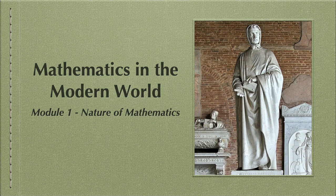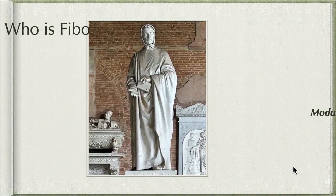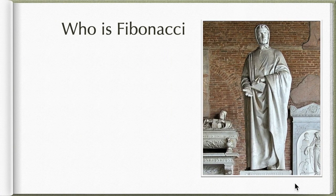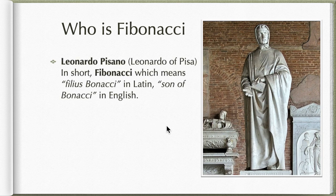So we need to answer now: who is this Fibonacci that we are talking about? This is actually Fibonacci — he is a person. This is his statue. So Fibonacci is just one of his names; he was popularized using that name. But actually, his name is Leonardo of Pisa or Leonardo Pisano, in short Fibonacci.